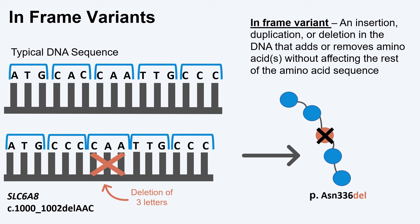In-frame variants insert, duplicate, or delete a multiple of three nucleotides in the reading frame — for example, 3, 6, 9, or 12. In this example, the letters C, A, A are deleted. This deletes the amino acid asparagine but leaves the protein otherwise unchanged.